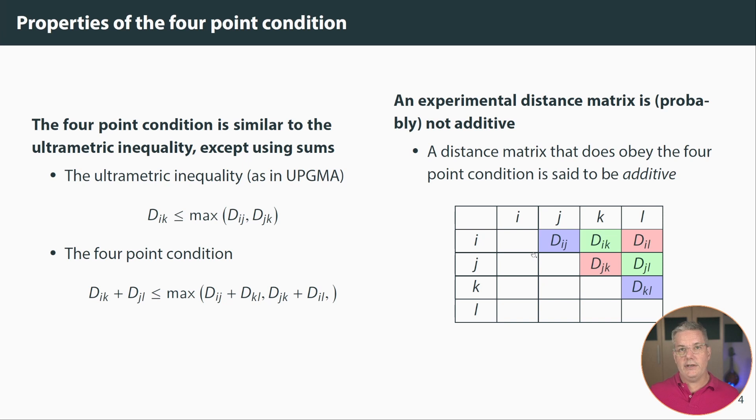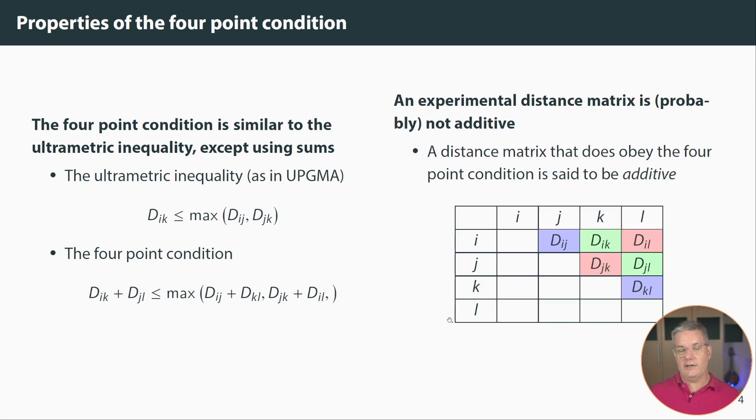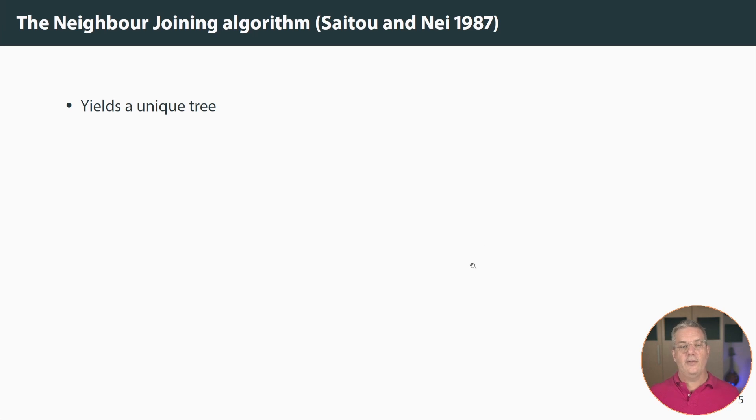Distance matrices unlike trees are rarely additive. However if they are additive, if they do obey the four-point condition they would be considered additive. Now because trees are additive and because the distances are specified by a tree it turns out that any one tree specifies a unique distance matrix. So one of the consequences of this is that if the distances in an input distance matrix are additive it is guaranteed to yield the one correct tree.